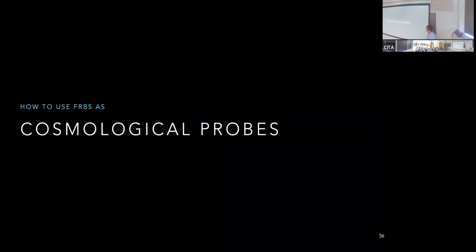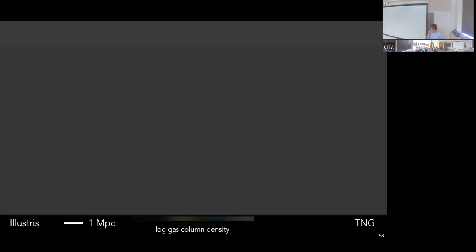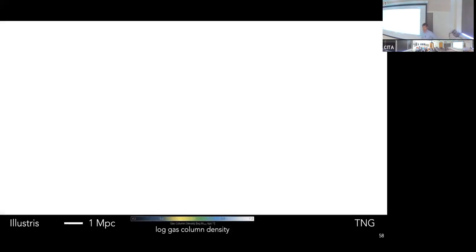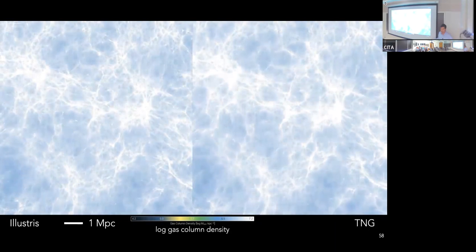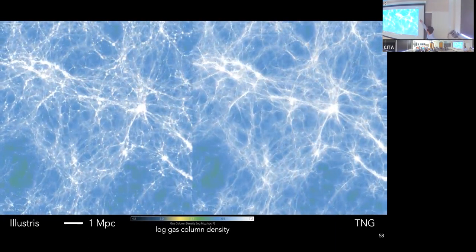In my last few minutes, I want to talk about something completely different: using FRBs as cosmological probes — specifically, using dispersion to map the large-scale baryon distribution. Dispersion counts every free electron along the line of sight, and therefore counts essentially every baryon, since about 90% of baryons are ionized and in the diffuse component of the universe.